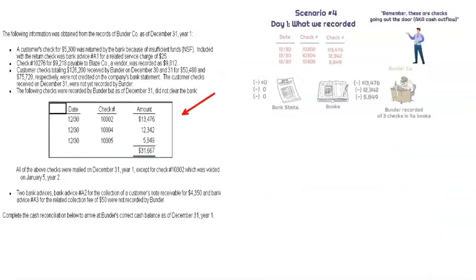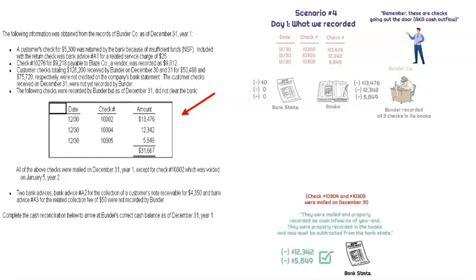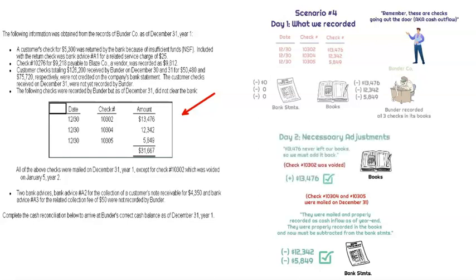We have three outstanding checks: 10302, 10304, and 10305. All three were recorded in the books but did not clear the bank by year-end. Two of them eventually cleared the bank, while check 10302 was voided. Gerald correctly subtracted checks 10304 and 10305 from cash, but Wendy at the bank still needs to subtract those two from the bank statements. As for check 10302 — since it was voided, no cash actually flowed out, so we need to add that $13,476 back to the books.